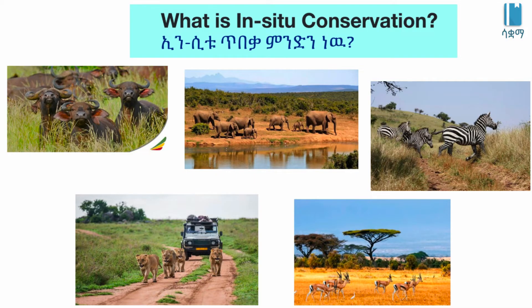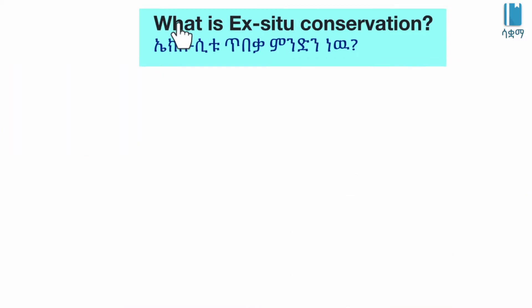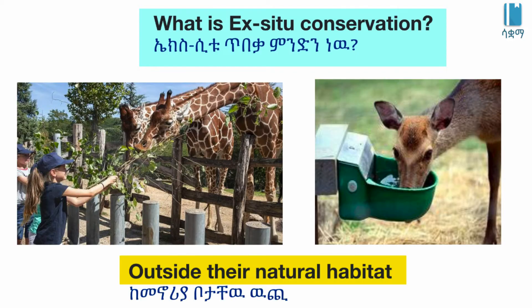Examples of in-situ conservation include Biosphere Reserves and natural Sanctuaries. What is ex-situ conservation? Ex-situ conservation is the conservation of biological diversity outside their natural area.